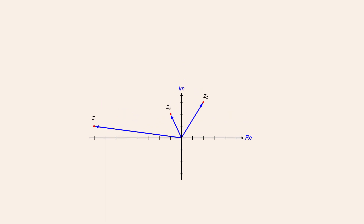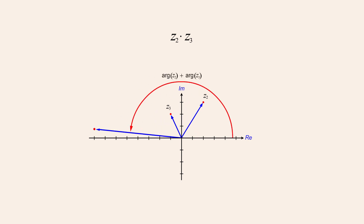We also said that when two complex numbers are multiplied, their arguments are added and their moduli are multiplied. So by adding the arguments of two complex numbers and multiplying their moduli, we produce the modulus and argument of their product, which we will call z1.